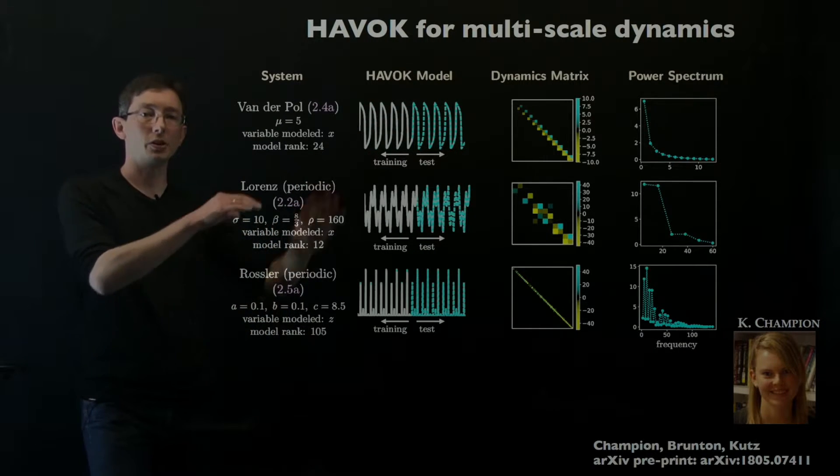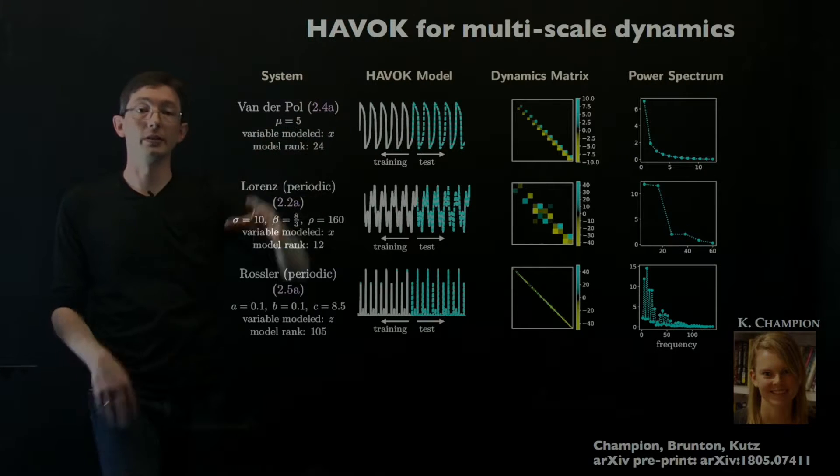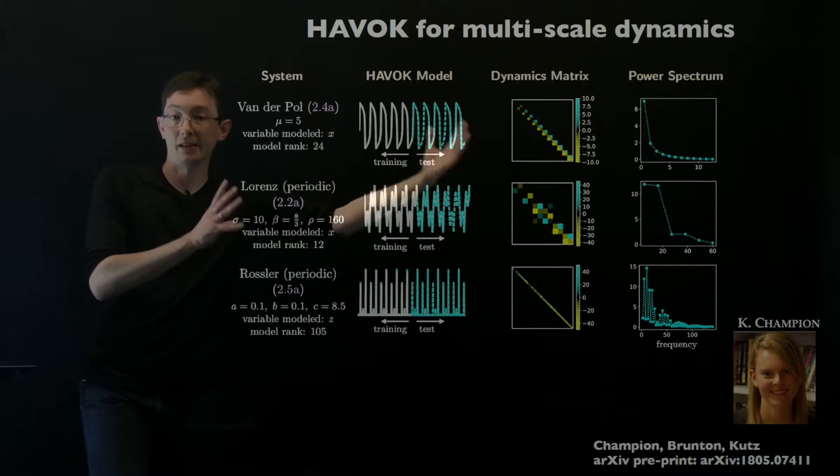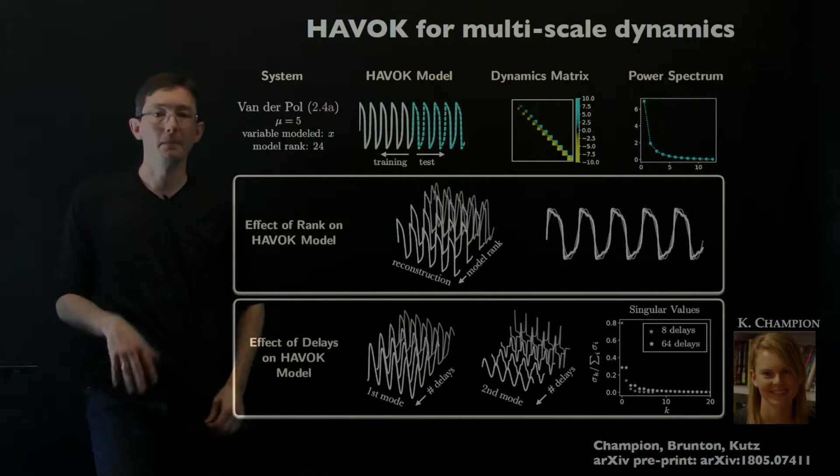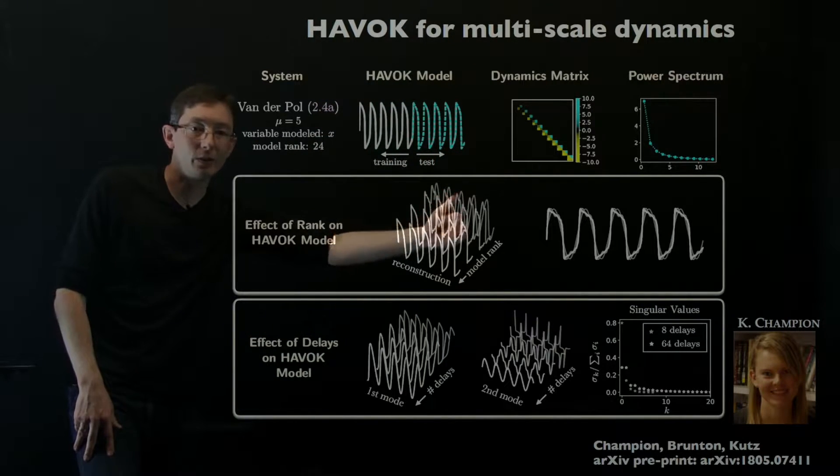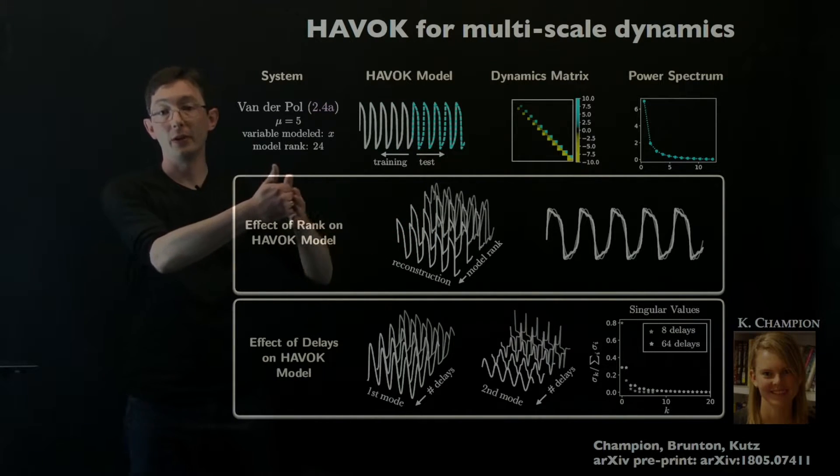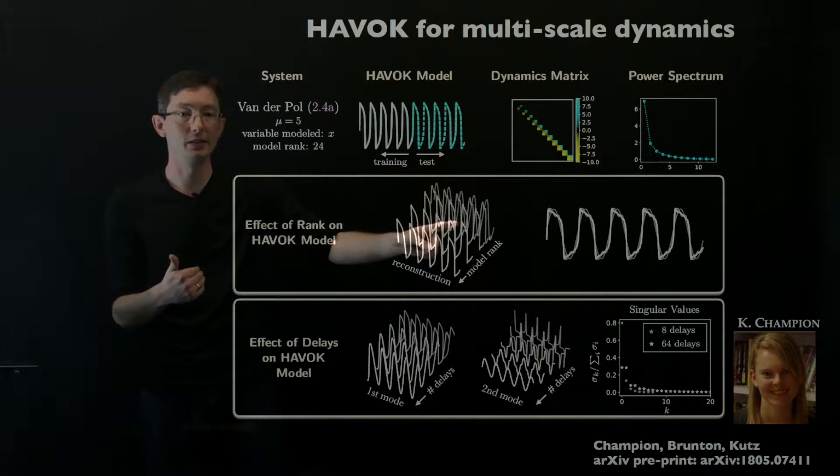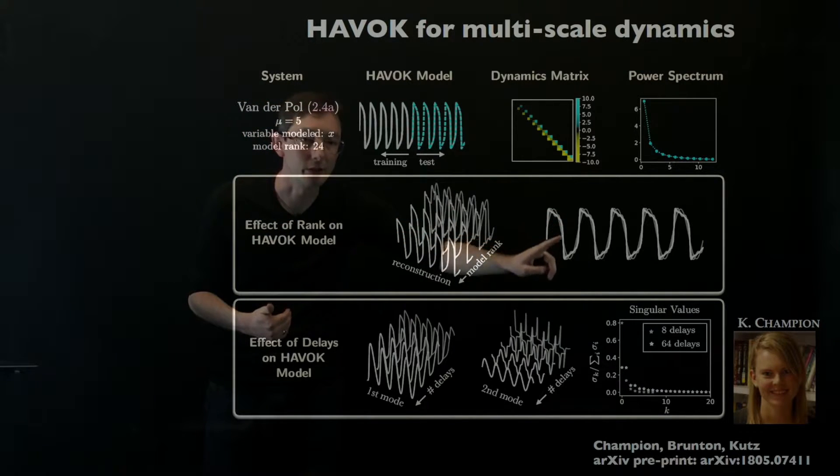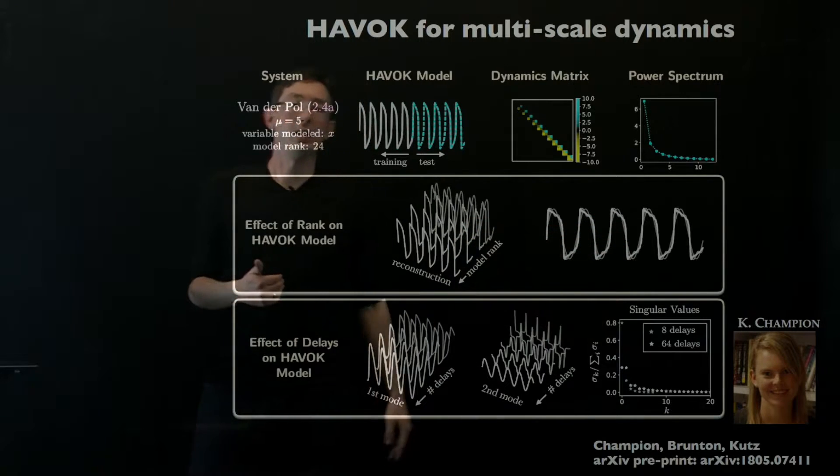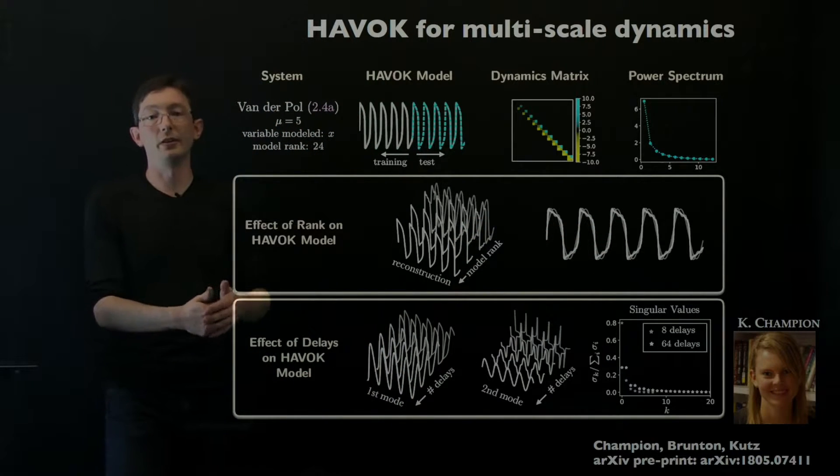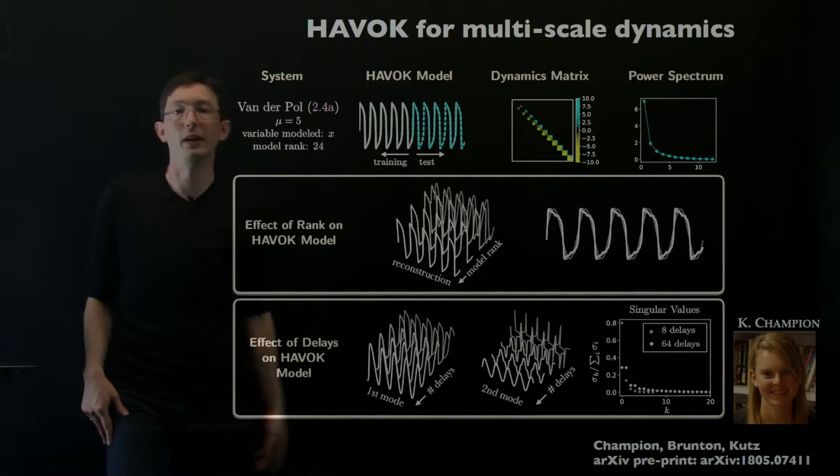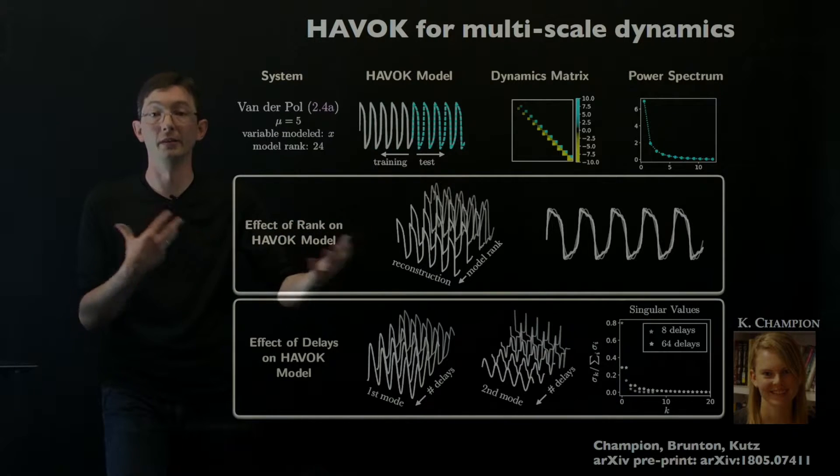And Kathleen has since gone on to show that you can use these delay coordinates for multi-scale systems, where you have vast scale separation, fast dynamics, and slow dynamics. So essentially if you increase the rank of your model, of your HAVOK model, if you increase how many eigentime delays you use, you get closer and closer to this nonlinear van der Poel oscillator. And also the longer or shorter the delays you use, the closer you get to these pure tone sine waves, which are these Koopman embeddings.